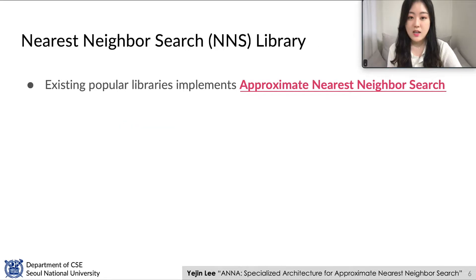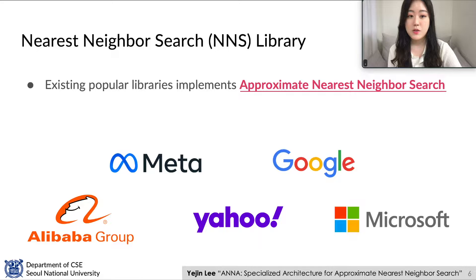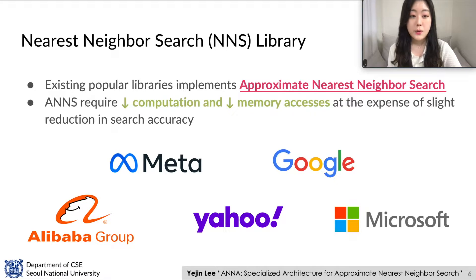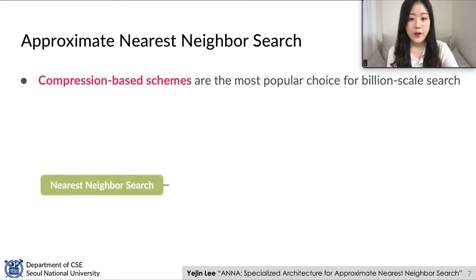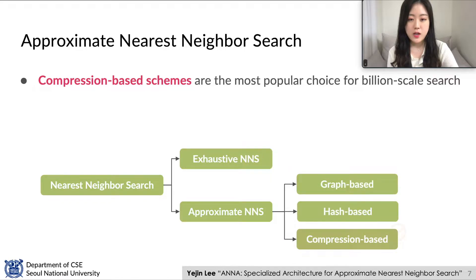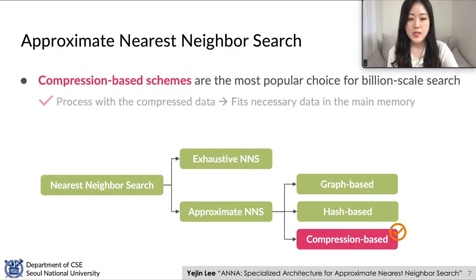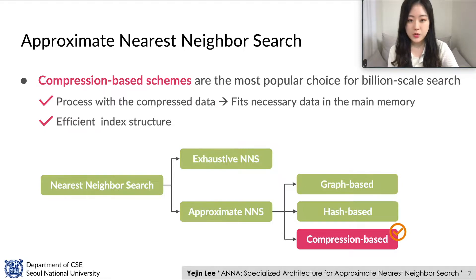When the dataset size becomes larger than billion scale, it is not feasible to inspect all database vectors every time a query arrives. Thus, many existing popular Nearest Neighbor Search libraries from major companies implement Approximate Nearest Neighbor Search, which requires much less computation and memory accesses at the expense of a slight reduction in search accuracy. Among various approaches, the compression-based approach is the most popular, since it compresses original database vectors to fit necessary data in main memory even with billion-scale datasets, and utilizes efficient index structures requiring much less memory and computation.